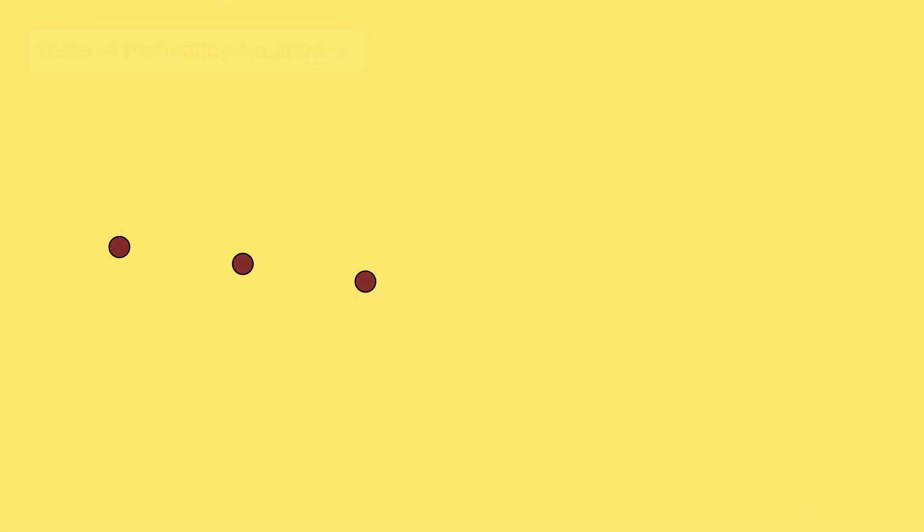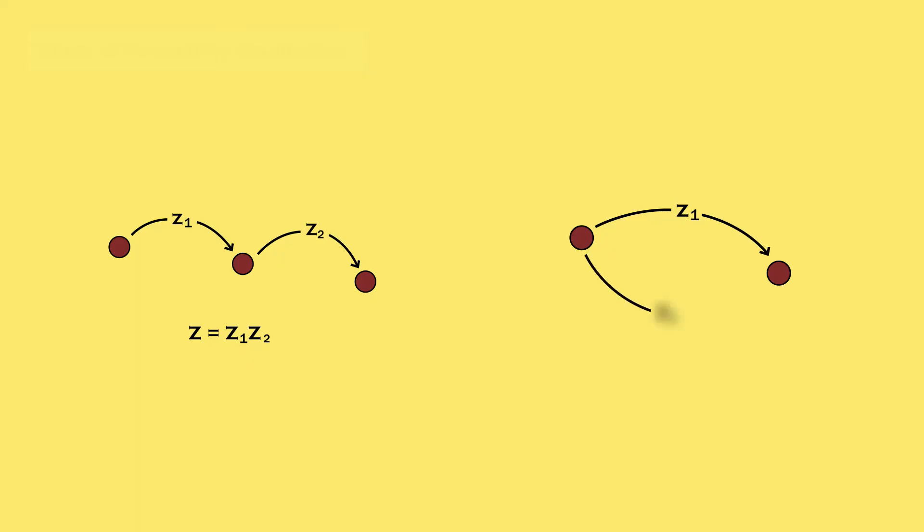Probability amplitudes follow two simple rules. When something happens in a sequence of independent steps, we multiply the amplitudes of each step. When something can happen in several alternative ways, we add the amplitudes for each path.